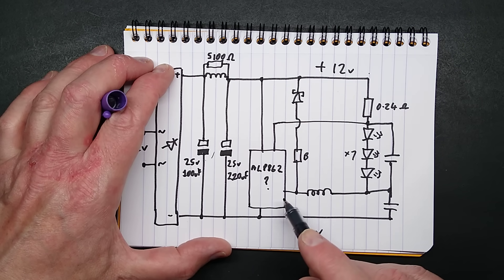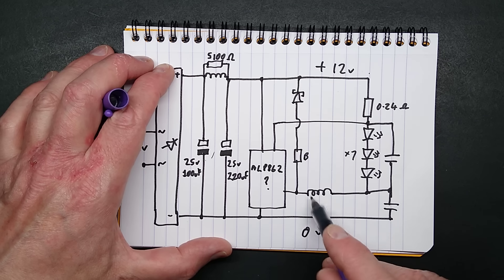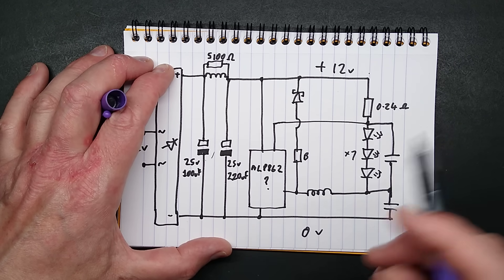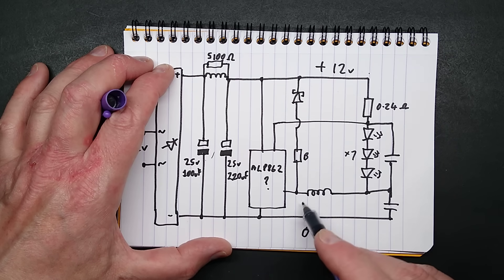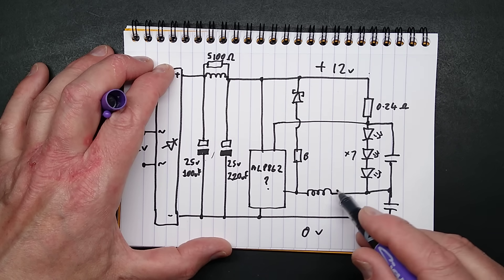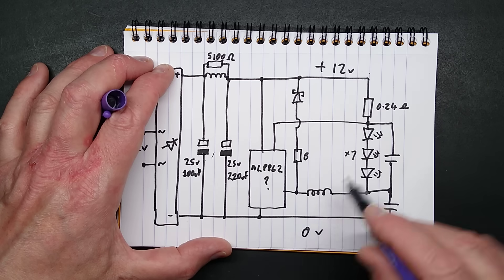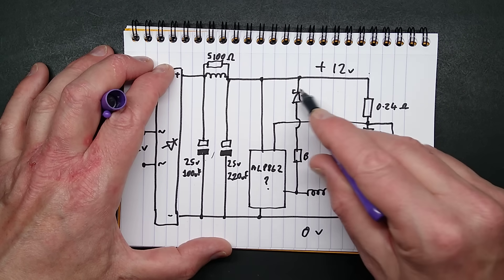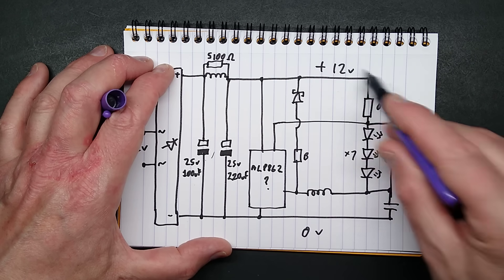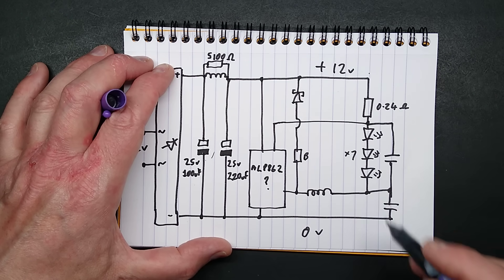When that then turns off this inductor, it causes the field in that to collapse. And whereas this end was going negative and this end was positive, it will reverse and it will find a path through this Schottky diode for greater efficiency. So the LEDs light in both half of that cycle.